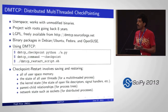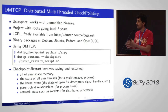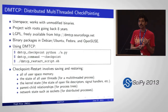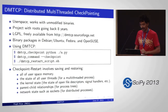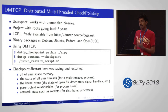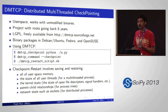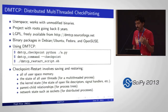What is involved in checkpointing: the very first thing one can think of is dumping the process memory — the entire user space memory — onto a file. But that is not sufficient. You also have to take care of open files, network sockets, the state of all user threads, all parent-child relationships, and so on. DMTCP takes care of this automatically. The runtime overhead of DMTCP is really low — in most cases, way less than 1%.